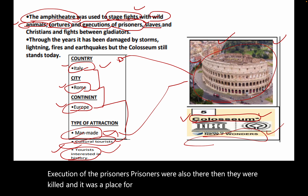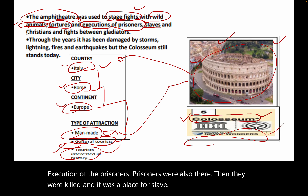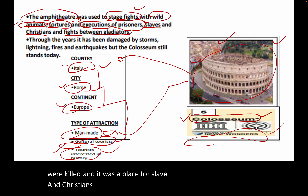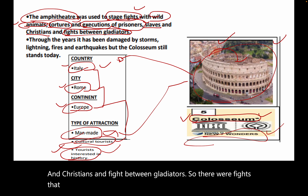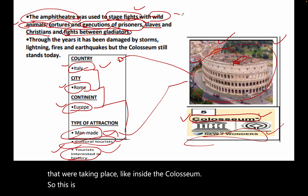It was also a place for slaves and Christians, and it hosted fights between gladiators. These were the events and activities it was originally designed for.